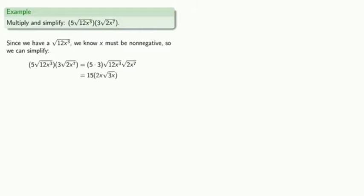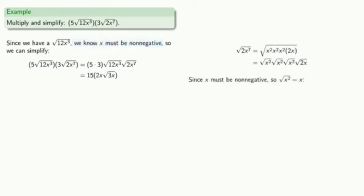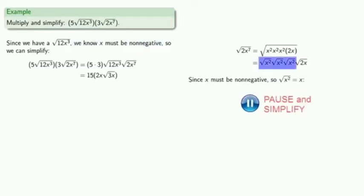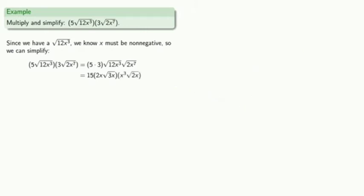For the square root of 2x to the 7th, we'll simplify by removing perfect square factors. Again, since x must be non-negative, we know that the square root of x squared is just x, so we can simplify all of the square roots of x squareds. And since we have three factors of x, we'll just write that as x to the power of 3.